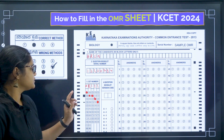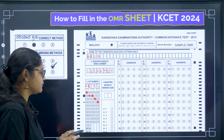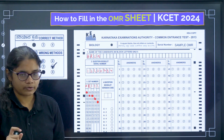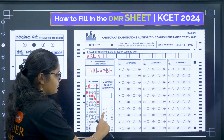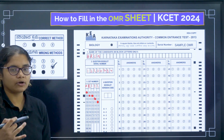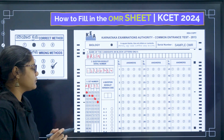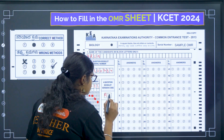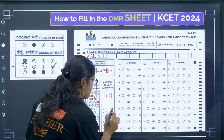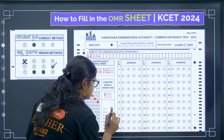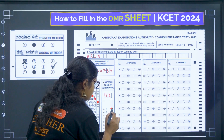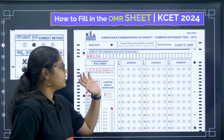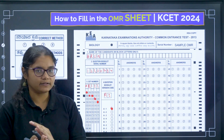The fourth column is the question booklet version code. There are different codes such as A1, A2, A3, A4, depending on the question paper. First, write the code — for example, A1 — in the box, and then circle the corresponding A1 bubble provided. This is how you fill all four segments before proceeding to fill your answers.